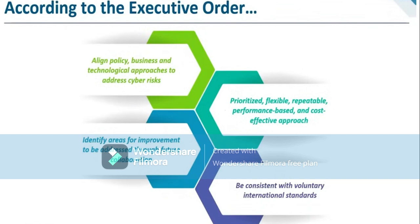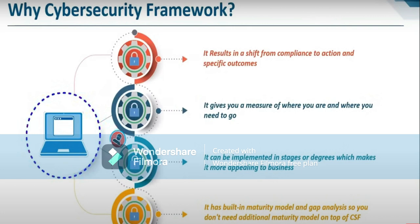Everything in your compliance should be aligned with the U.S. government standards, and with cybersecurity risk controls. That is why the government helps to enhance that side and prioritize flexibility, repeatable performance-based, and cost-effective approaches — to identify risk, implement profitable solutions, and make sure they do not happen in the future through maintenance. Being consistent with voluntary international standards means constitutionally increasing your policy to bypass threats that are actually coming into your systems.